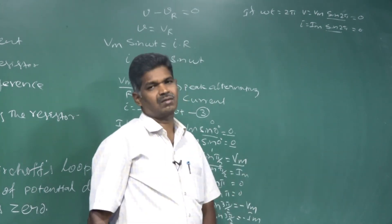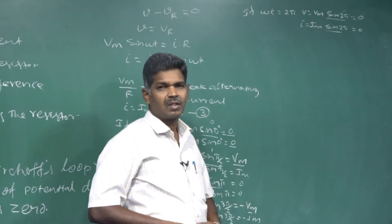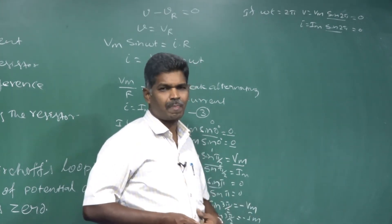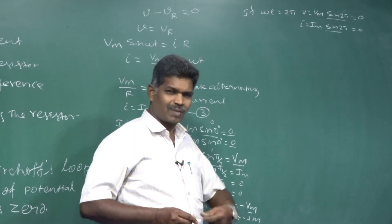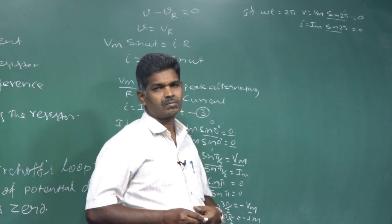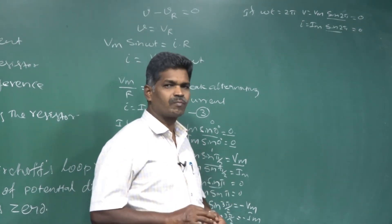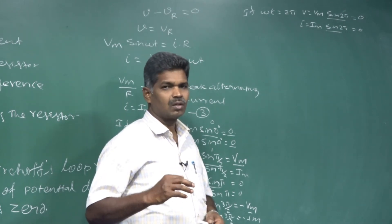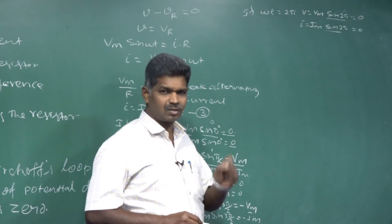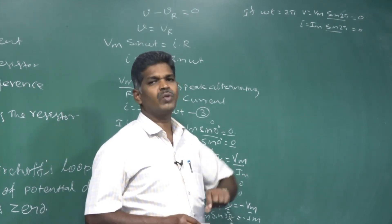From the waveform diagram and from our equations, we can say both voltage and current are in phase. Because the equations V = VM sin(ωt) and I = IM sin(ωt) have no phase difference between them - phase difference is zero - the two are in phase.